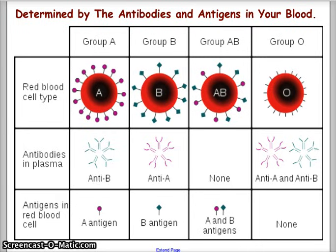The last group is Group O. O blood has both A and B antibodies and no antigens. O blood is actually the most common type of blood in the population.